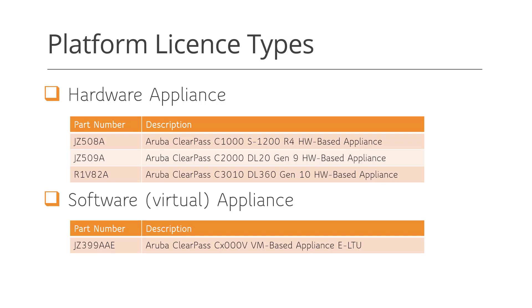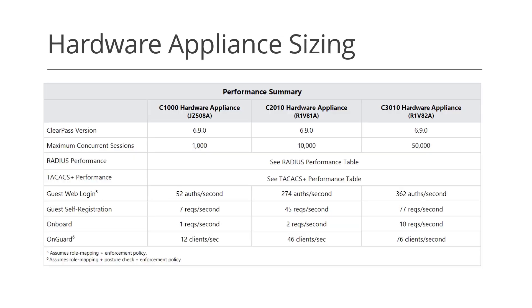You should purchase the appliance that fits the expected load of your environment. Here's the performance summary for the three hardware appliances: C1000, C2000, and C3000 series respectively.